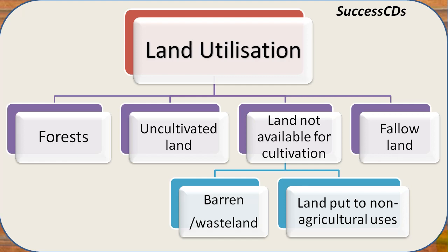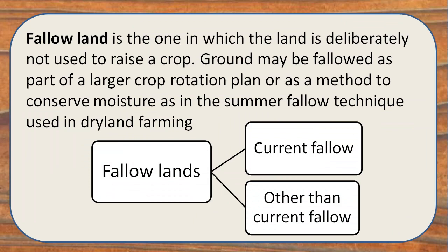The last and important one is fallow land. Fallow land is the one which we leave deliberately and intentionally without any crop for a certain time duration so that it can regain its nutrients, organic material, and fertility. Fallow land is of two types: current fallow and other than current fallow. Current fallow is left without cultivation for a year or less, while other than current fallow has no cultivation for more than one year up to five years.